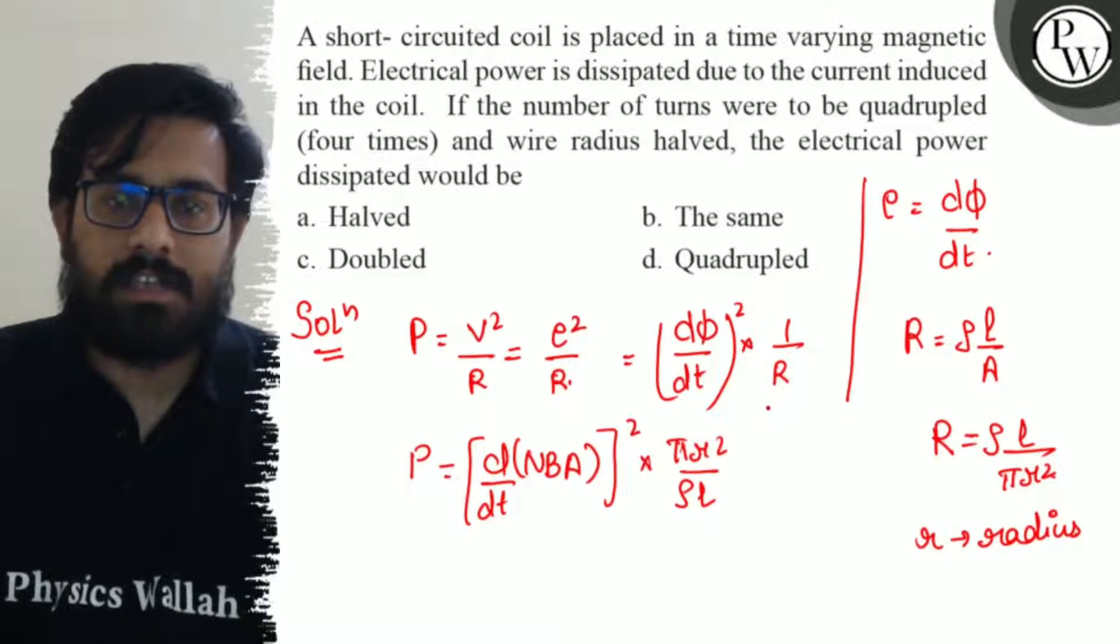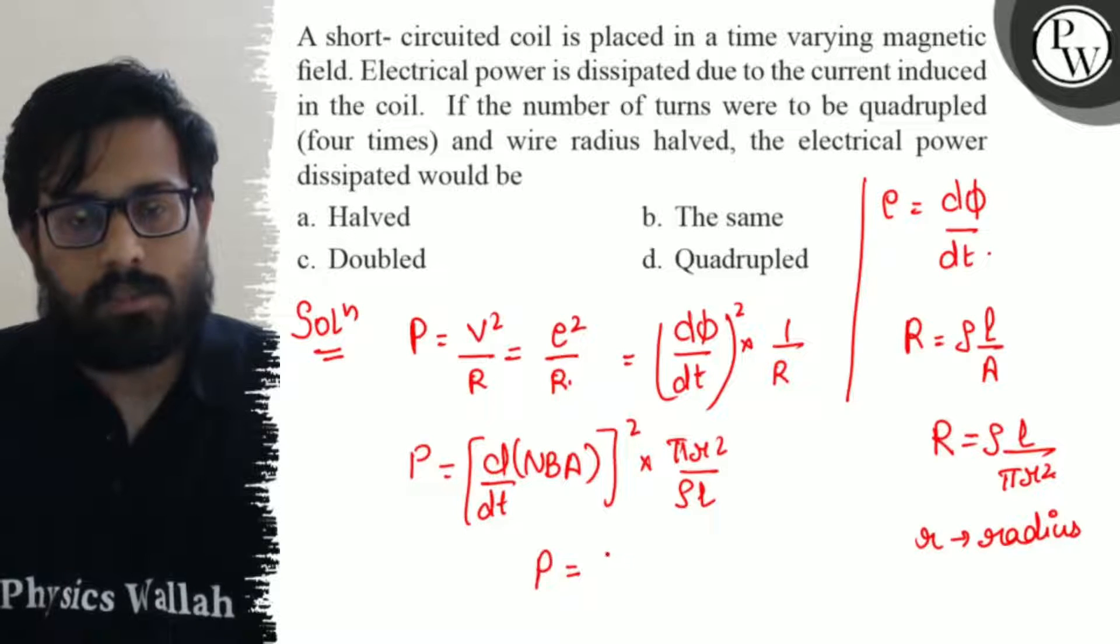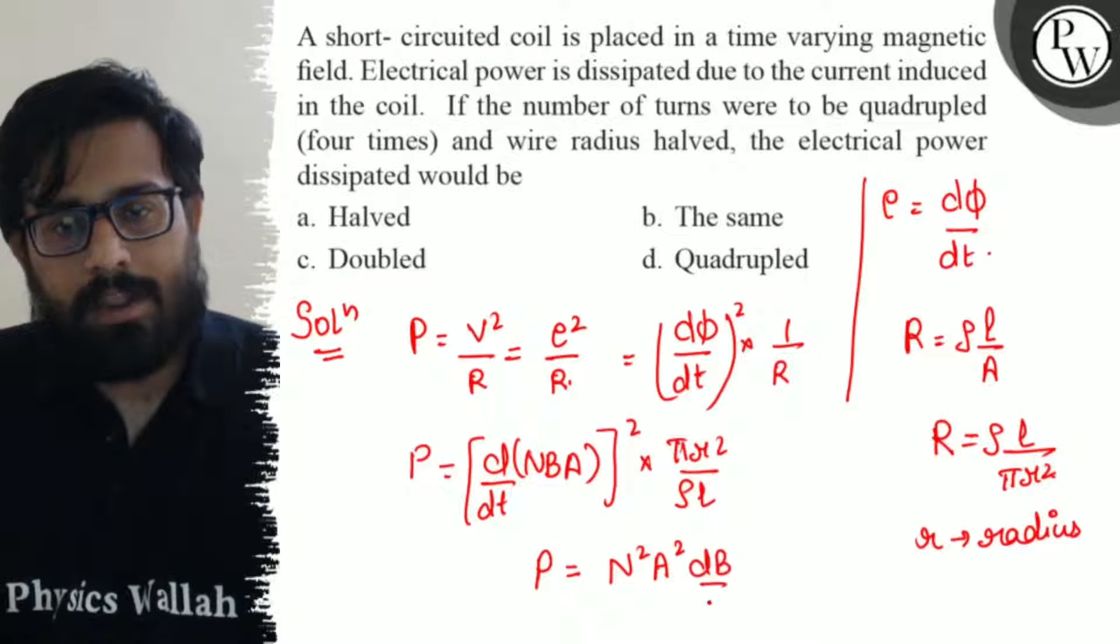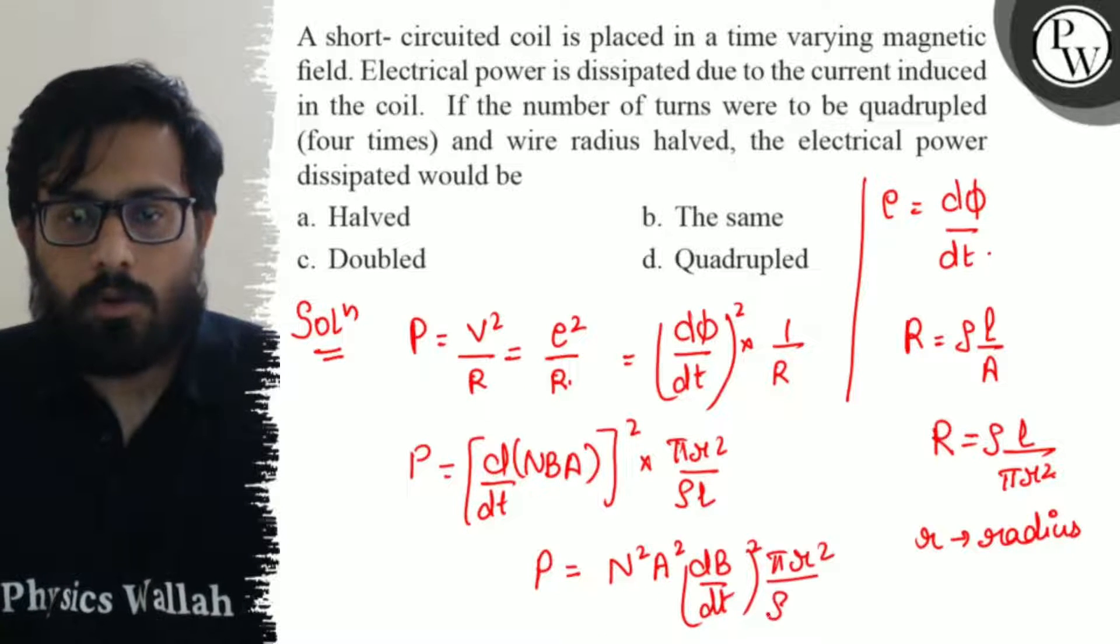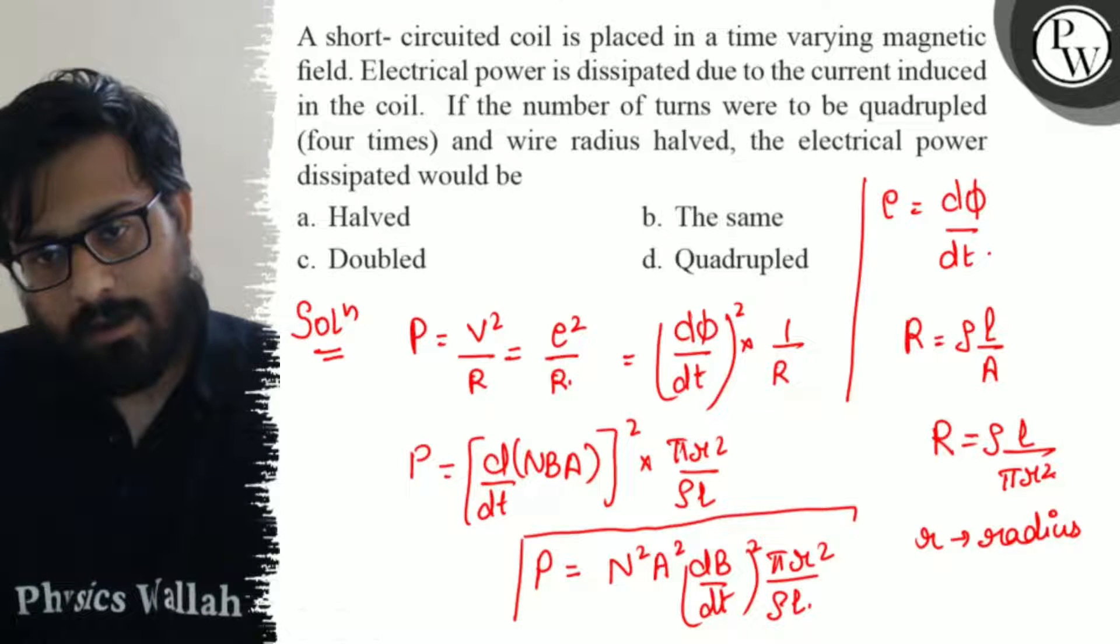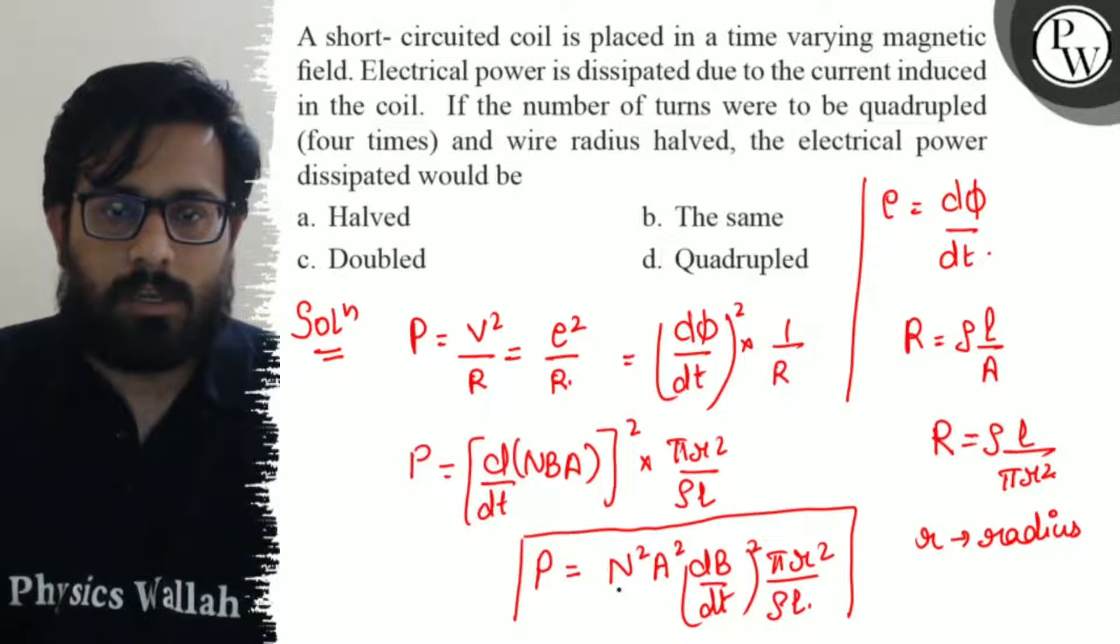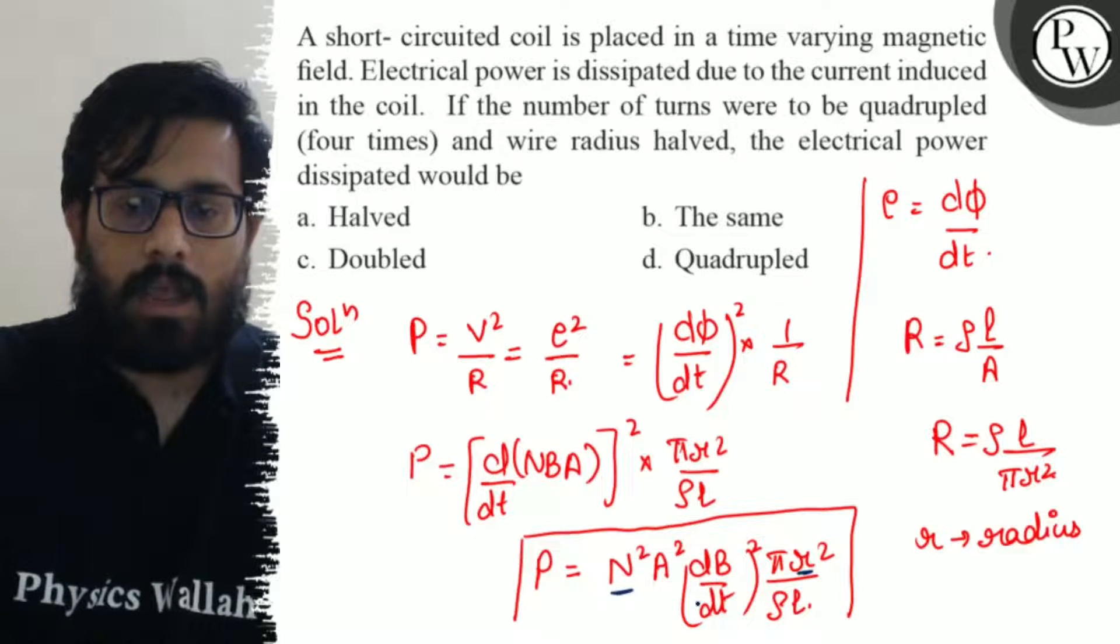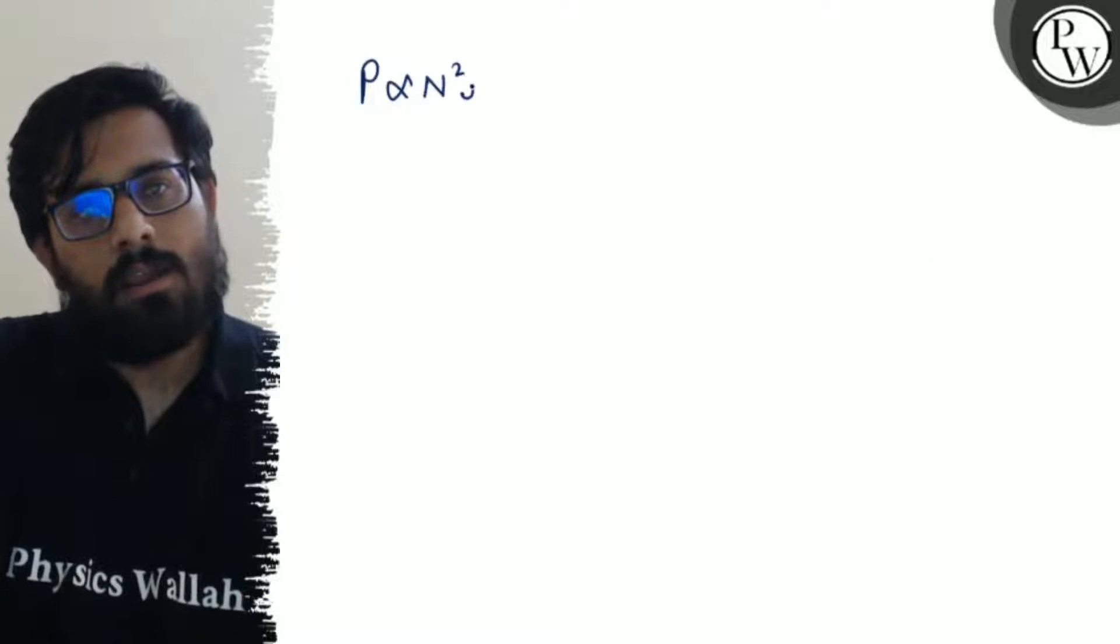I come to know that power is equals to N²A² times (d/dt)² into πr² upon ρL. I have the power formula. Now I need to check which of these factors vary. So according to the question, number of turns I made 4 times and radius I made half. So from this particular formula, P can be written as proportional to N² and r².